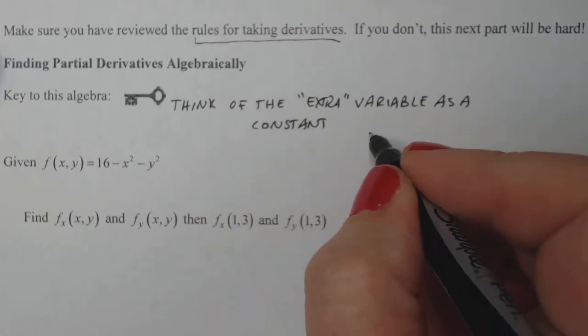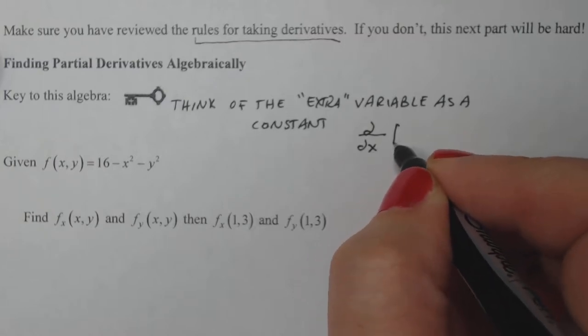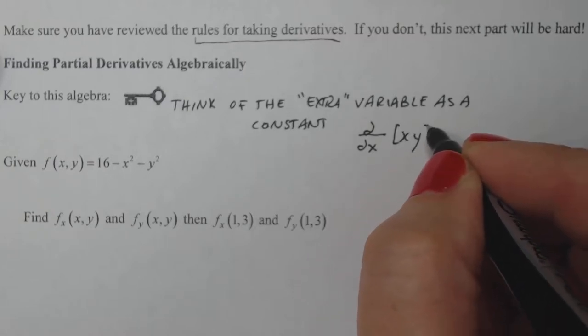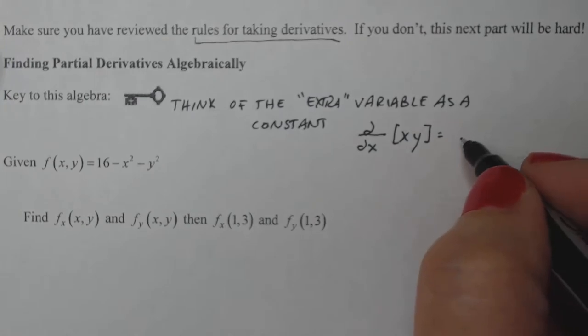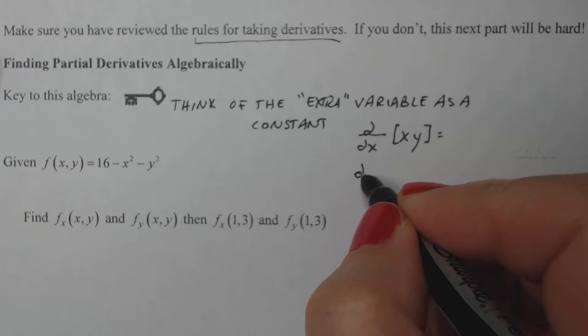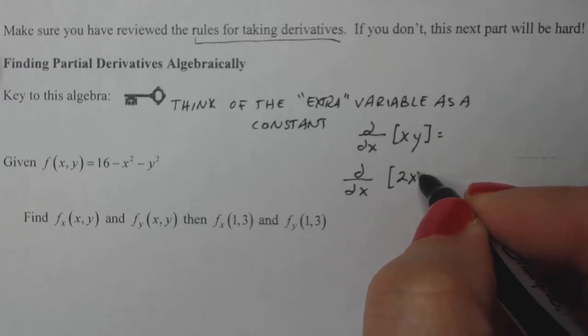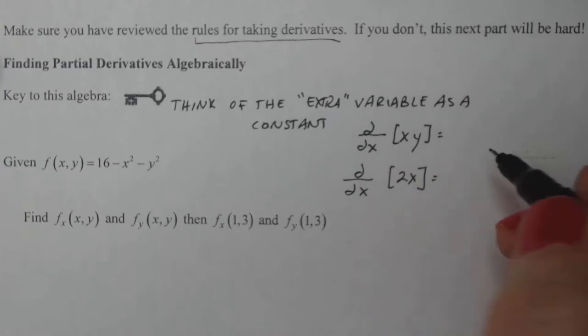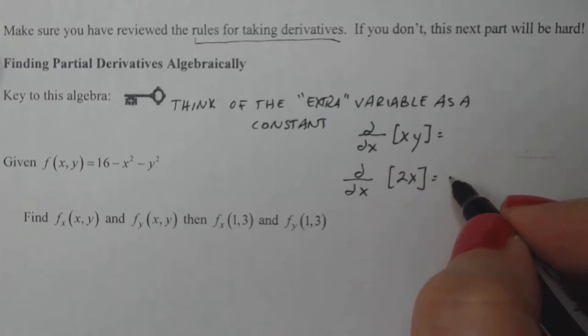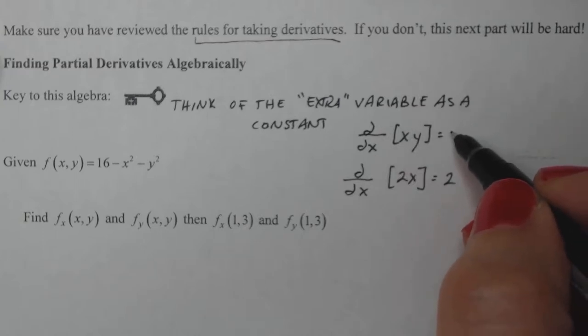So in other words, if I'm going to take the partial with respect to x of the function xy, I have to think of y as a constant. And I would say, okay, well, what's the derivative of this? Let's put a constant in there. Let's say I have 2x. How would you take the derivative of that with respect to x? It would just be 2, correct? So if I do the same thing, I think of y as a constant. The partial with respect to x then would just be y.